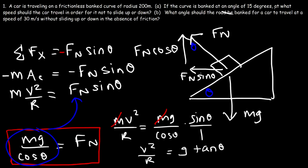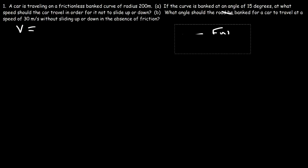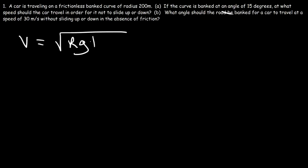To solve for speed, multiply both sides by r: v² = rg tangent theta. Taking the square root of both sides gives the design speed equation: v = √(rg tan θ). This equation gives the speed at which a car can maintain its position on a banked curve without sliding up or down when no friction is present.